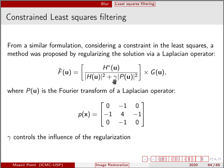Both the Wiener filter and the constrained least-squares filter are very simple yet very effective methods for image restoration, addressing both noise and blur. They are very good tools for general-purpose image restoration.